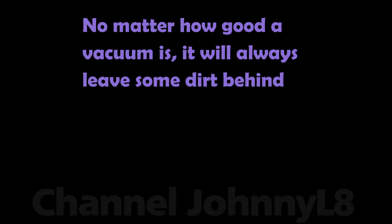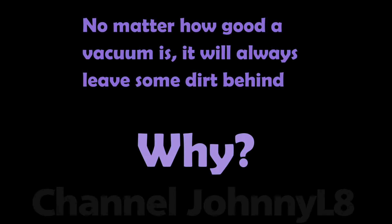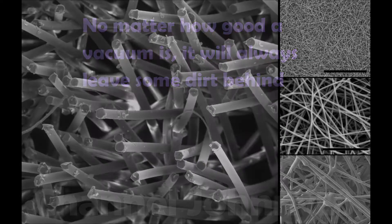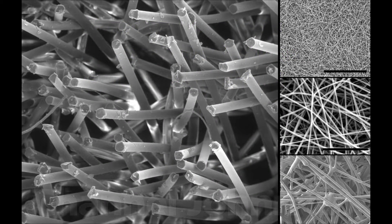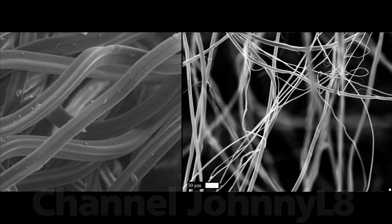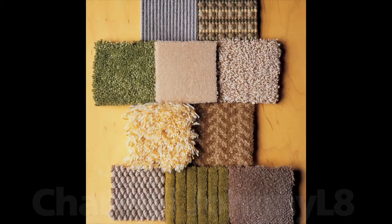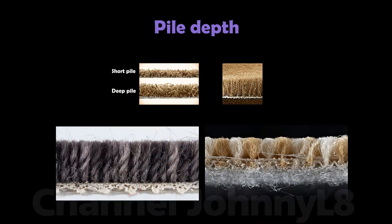No matter how good a vacuum is, it will always leave some dirt behind, and this is why. A carpet is a complex network of densely packed fibres that can capture particles. Carpets come in all shapes and sizes, and the main differences from the perspective of trapping dust are the pile depth,